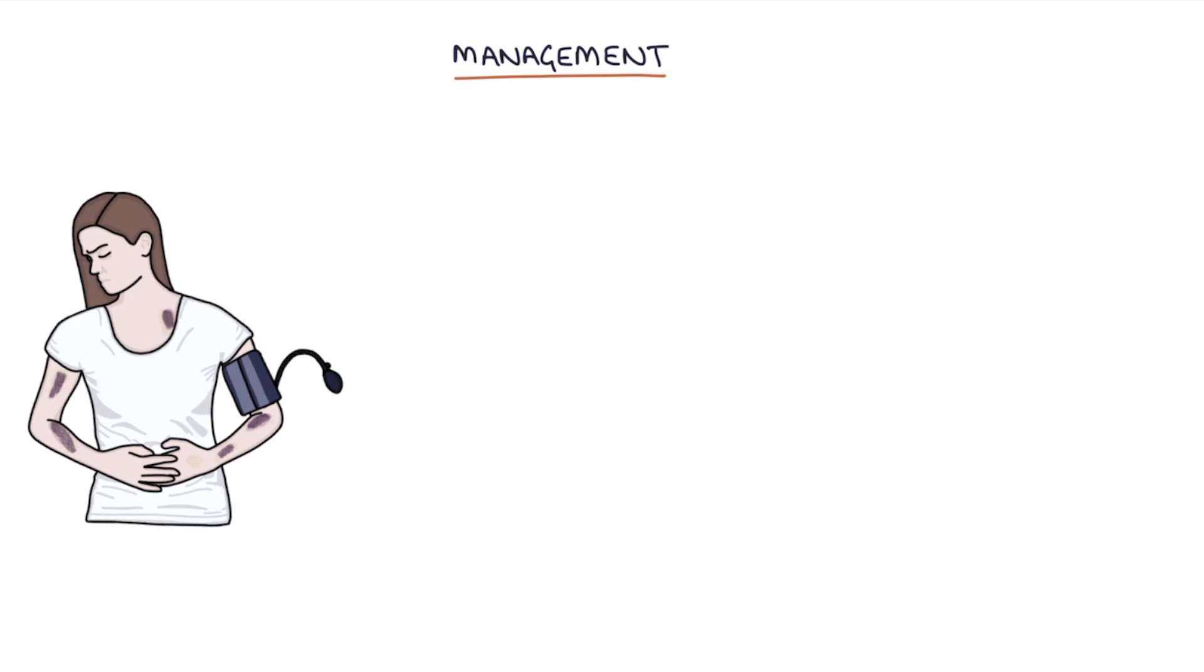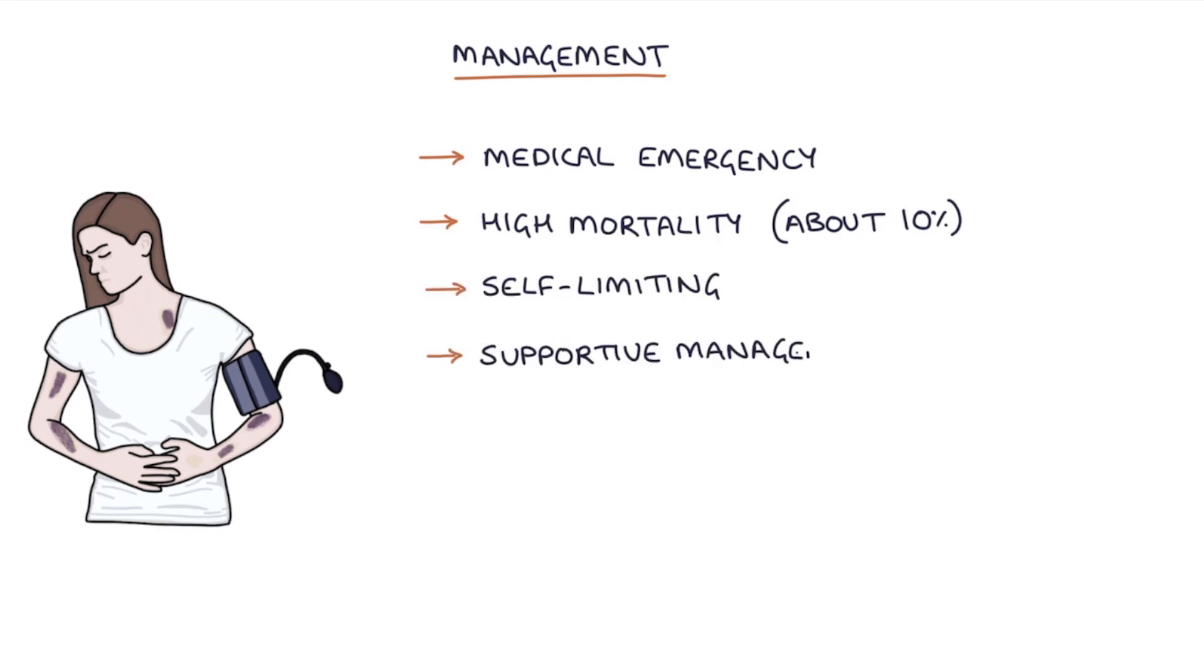So how do we manage the condition? Well, hemolytic uremic syndrome is a medical emergency and it's got a very high mortality rate of about 10%. The condition is self-limiting, so treatment is with supportive management, and this is with anti-hypertensive medication to keep the blood pressure in the normal range.